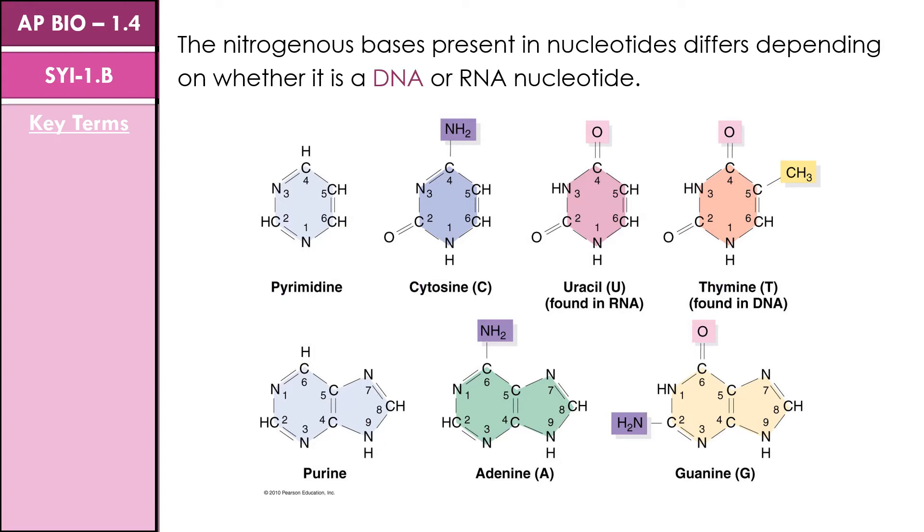RNA and DNA differ in the types of nitrogenous bases that are found in their nucleotides. Four bases are found in DNA: adenine, cytosine, guanine, and thymine.